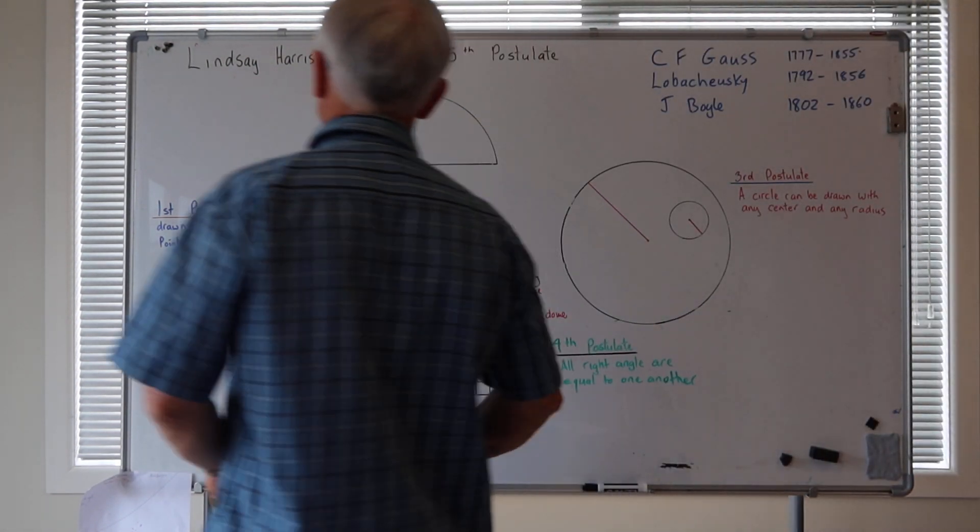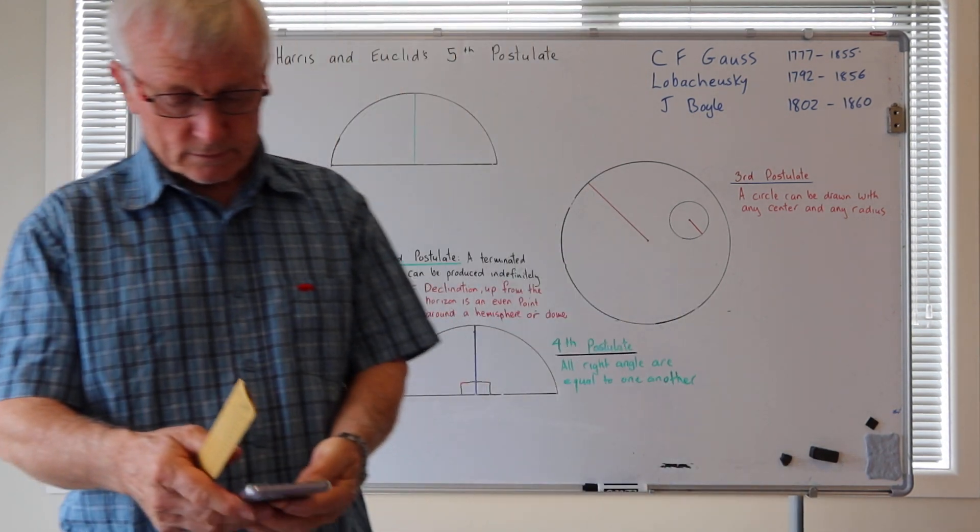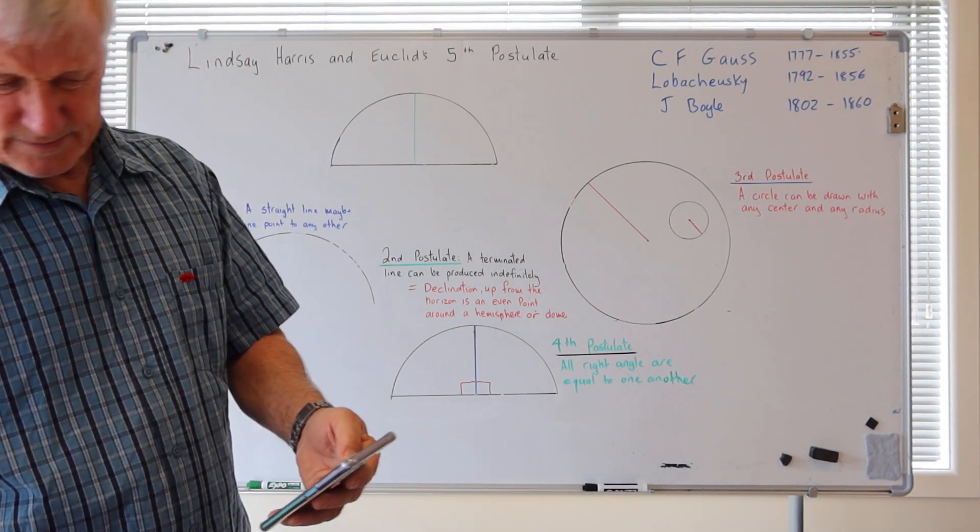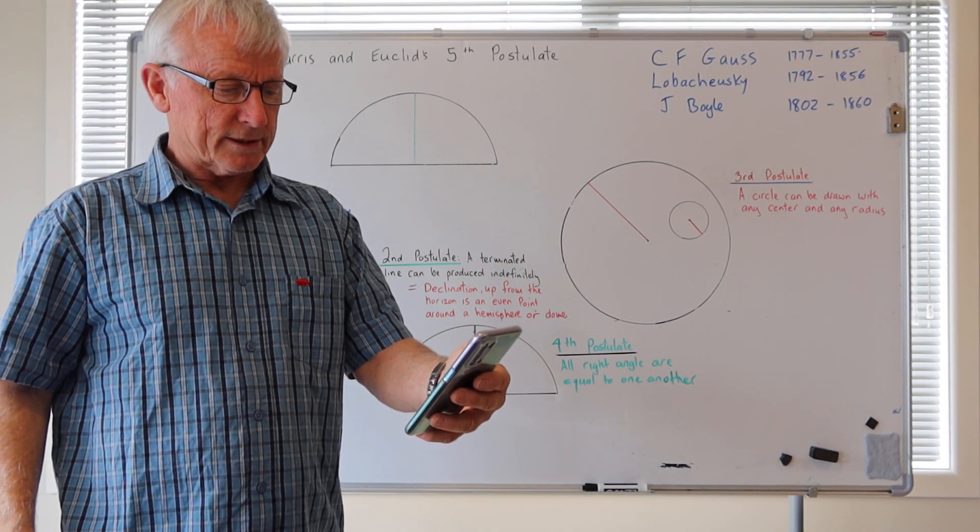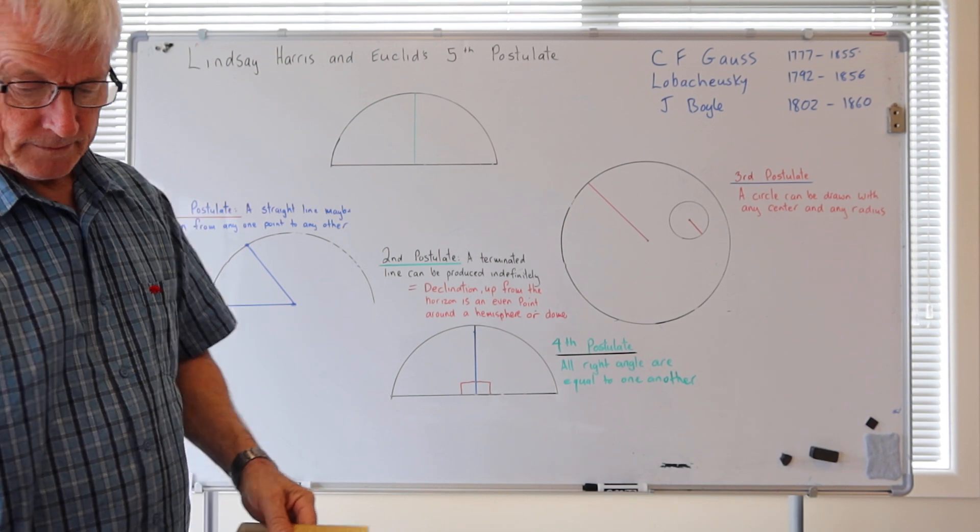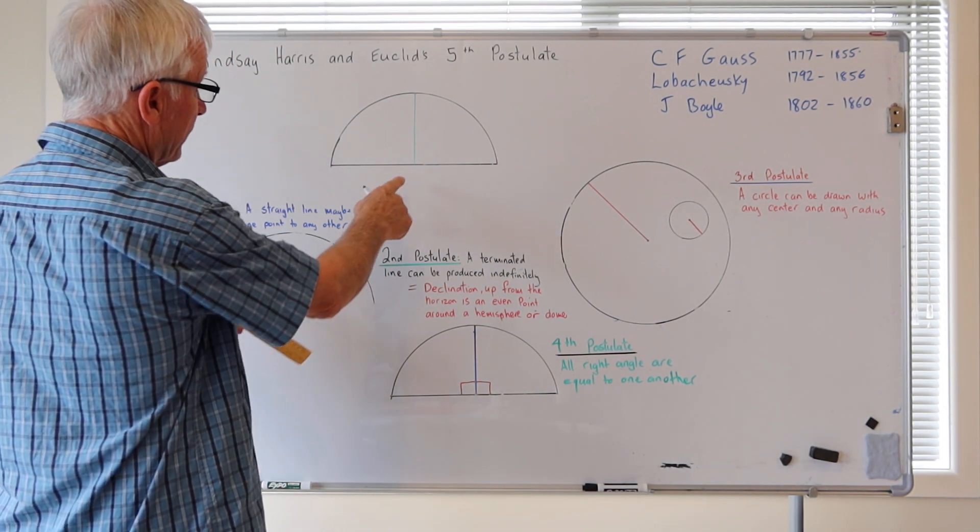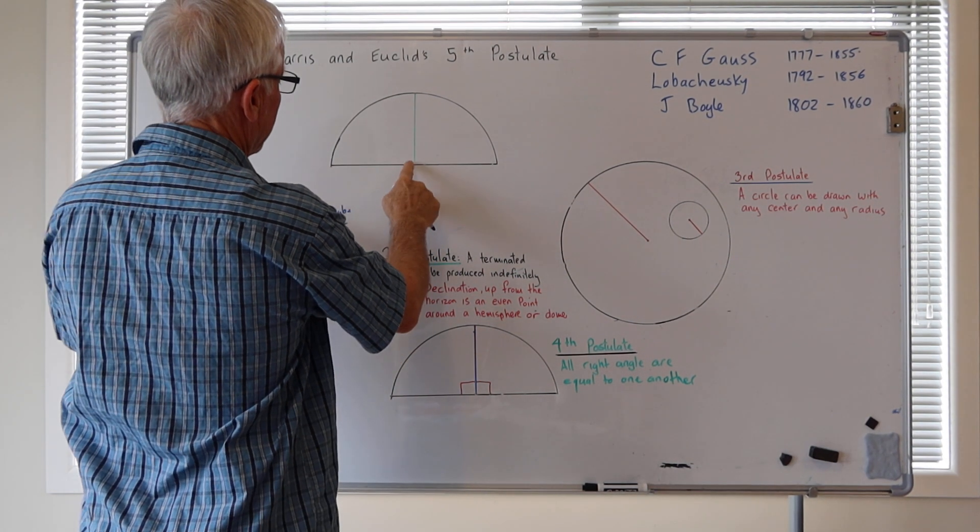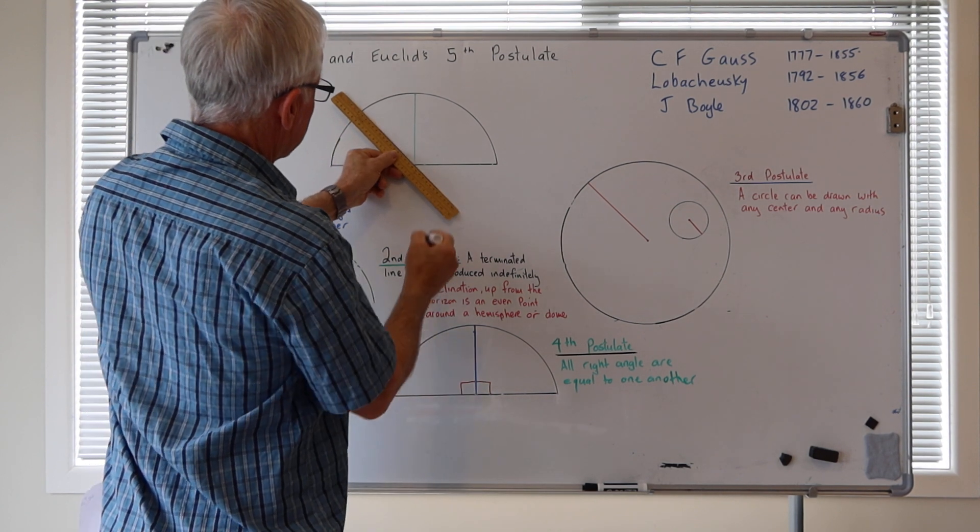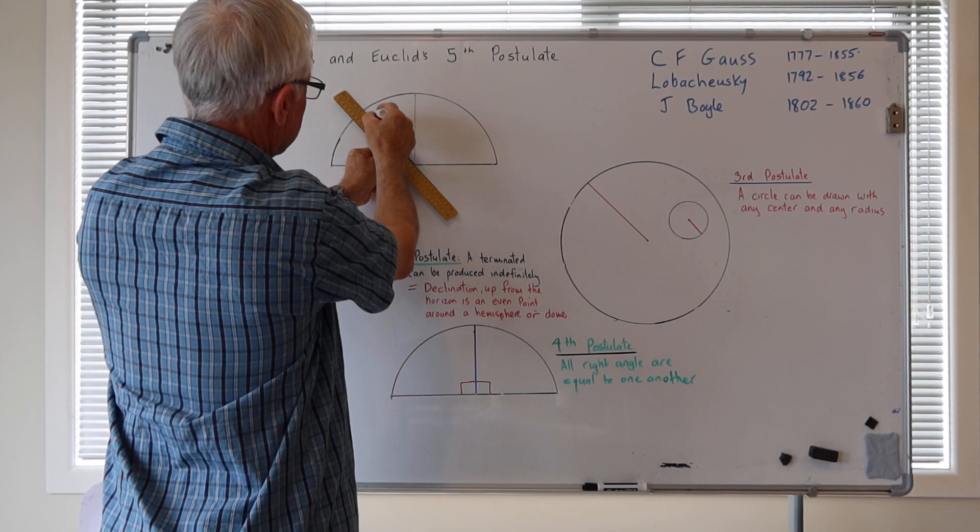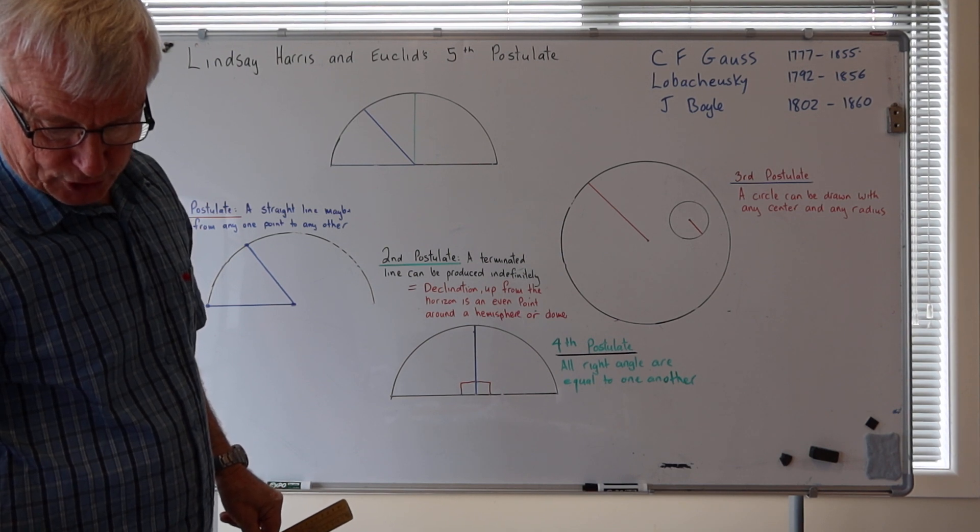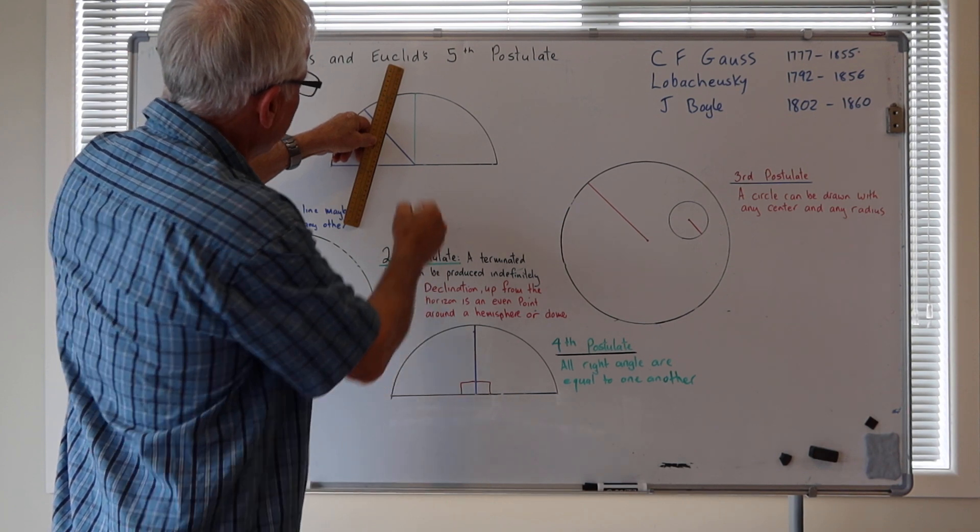So all roads lead to the fifth postulate. Now what is the fifth postulate? I'll read it out. That if a straight line falling on two straight lines... So there we have two straight lines. One, well actually, there we take another straight line from man's 90 degrees. That's where man is always standing, two straight lines. If a straight line falling on two straight lines, in fact take another straight line. Now we'll take this so it's falling on these two lines.